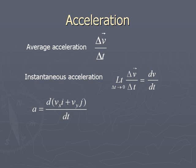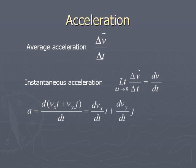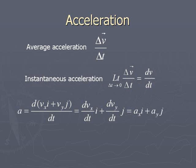The relation for acceleration is dv̄/dt. Since we derived v̄ as vx·i plus vy·j, acceleration a equals d/dt of (vx·i + vy·j), which gives dvx/dt·i plus dvy/dt·j. Here dvx/dt is ax and dvy/dt is ay, so acceleration a equals ax·i plus ay·j.